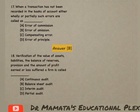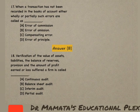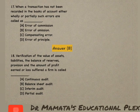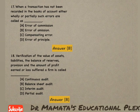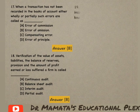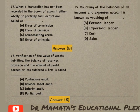Next: Verification of the value of assets, liabilities, the balance of reserves, provisions, and the amount of profit earned or loss suffered of a firm is called balance sheet audit. Verification ho raha hai sabhi assets ka, sabhi liabilities ka, balance sheet ki sabhi heads ka — isse hum balance sheet audit kahenge. So option B is the correct answer.